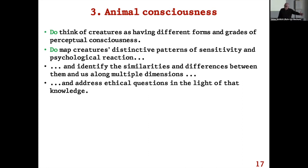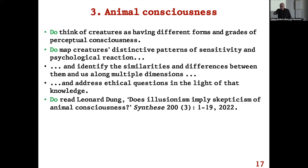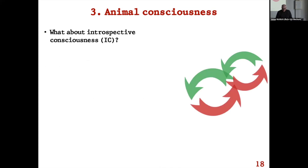Then address ethical questions about how we should treat animals in the light of that knowledge. Look at how similar their perceptual consciousness is to ours — we care about each other, we care about some creatures close to us; how far should we extend that concern? Think about it in the light of this knowledge, which is the only knowledge that's relevant, even if it's very complex. Do read Leonard Dang's paper on whether illusionism implies skepticism about animal consciousness — a very nice paper.